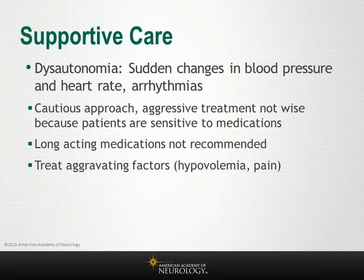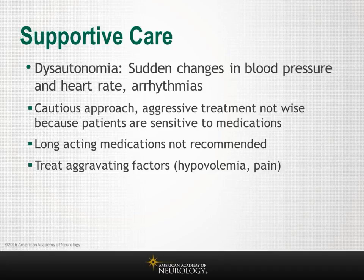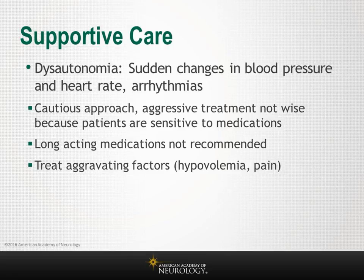Dysautonomia can cause sudden changes in heart rate, blood pressure, or arrhythmias. When managing autonomic instability, be extremely conservative and avoid aggressively treating blood pressure fluctuations, as patients are very sensitive to medications. Over-treating tachycardia or hypertension may result in prolonged hypotension or bradycardia. It is often best to avoid treating the fluctuations if possible; if treatment is necessary, use short-acting medications. Pain can aggravate hypertension or cause tachycardia, and hypovolemia can aggravate hypotension and needs to be treated.